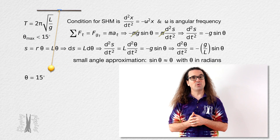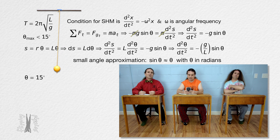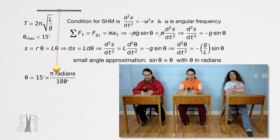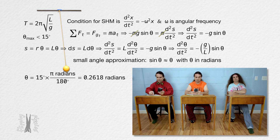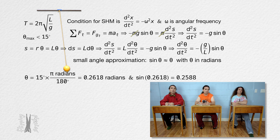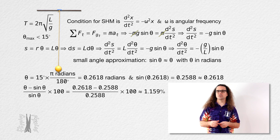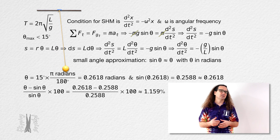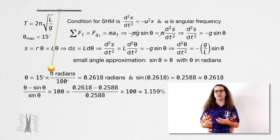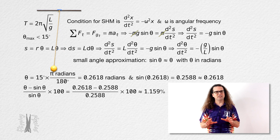Please convert 15 degrees to radians and take the sine of that angle. To convert 15 degrees to radians, we multiply by pi radians over 180 degrees, which gives 0.2618 radians. And the sine of that equals 0.2588, which is pretty close to 0.2618. At 15 degrees, there is roughly a 1% difference between the sine of the angle and the angle. Typically, between 10 and 15 degrees is where the small angle approximation is considered to be valid. The larger the angle, the larger the error in this approximation — definitely do not go over 15 degrees.